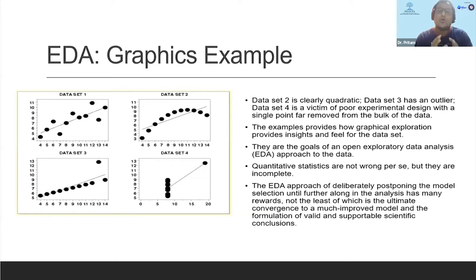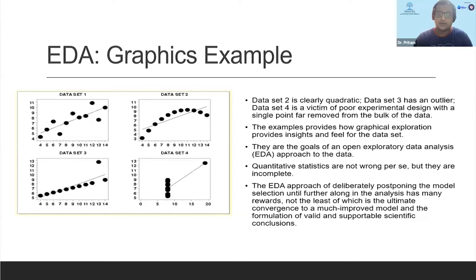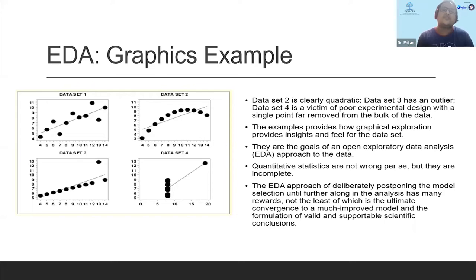Now you can understand why I was stressing on graphical exploration first — these insights were not available and not possible to obtain by just looking at summary statistics. The goal is to have an open mind, look at your data, and try to understand what the underlying structure is. I'm not saying quantitative statistics are wrong, but just in themselves they are incomplete. EDA deliberately postpones model selection until you have conclusive evidence that whatever assumptions you're trying to put in fit well, so you have a more scientific conclusion.